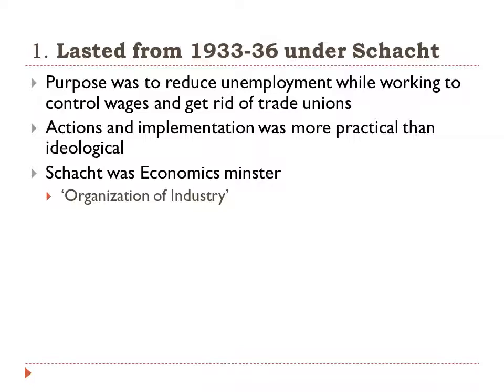As economic minister, Schacht established an organization called the Organization of Industry, made up of businesses, employers' associations, and finance houses, with the purpose of increasing trade and industry. It worked really well because it was an organization of essentially the elites of industry, and it showed that Germany was working to improve its economy. People started giving Germany loans again — loans that could be used to invest in its industry and jumpstart everything again.